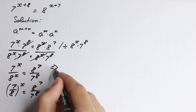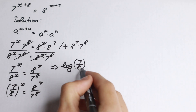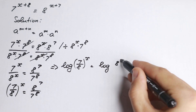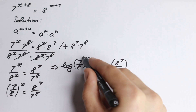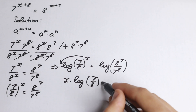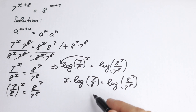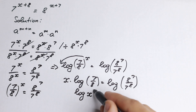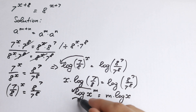Now let's apply log on both sides. On the left we get log of (7/8) raised to the power x, and on the right, log of 8 to the power 7 over 7 to the power 8. Using the key log property — log of x to the power m equals m times log x — the exponent x comes down, giving us x times log(7/8) equal to log(8^7 / 7^8).